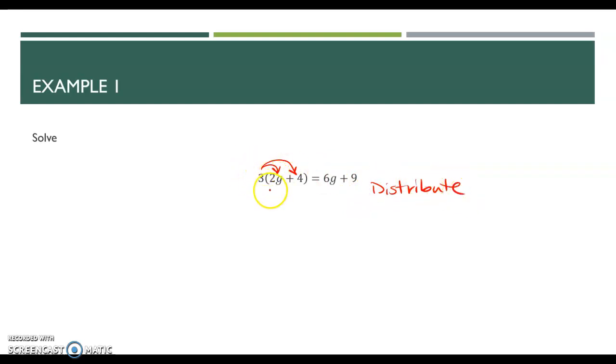And so then 3 times 2 is 6g and 3 times 4 is 12 equals 6g plus 9. And then we always went for, I always go for moving variables first. And part of that is just because then right away, I know whether I have variables or don't have variables. So I have a positive 6g that I'm going to move to the other side.